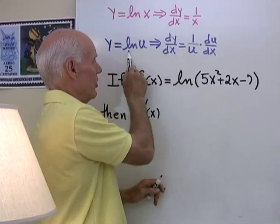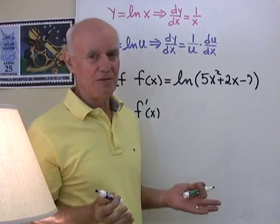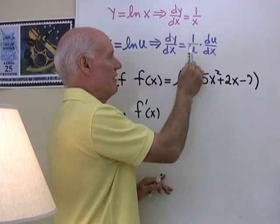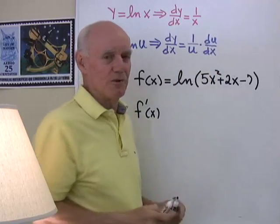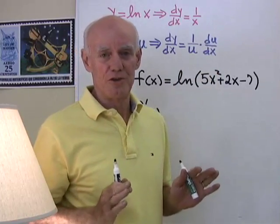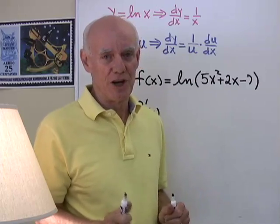But if y is equal to the log of u, where u is some other function of x, then the derivative with respect to x is 1 over u times the derivative of u. That's the chain rule applied to the formula for derivatives of logarithms.